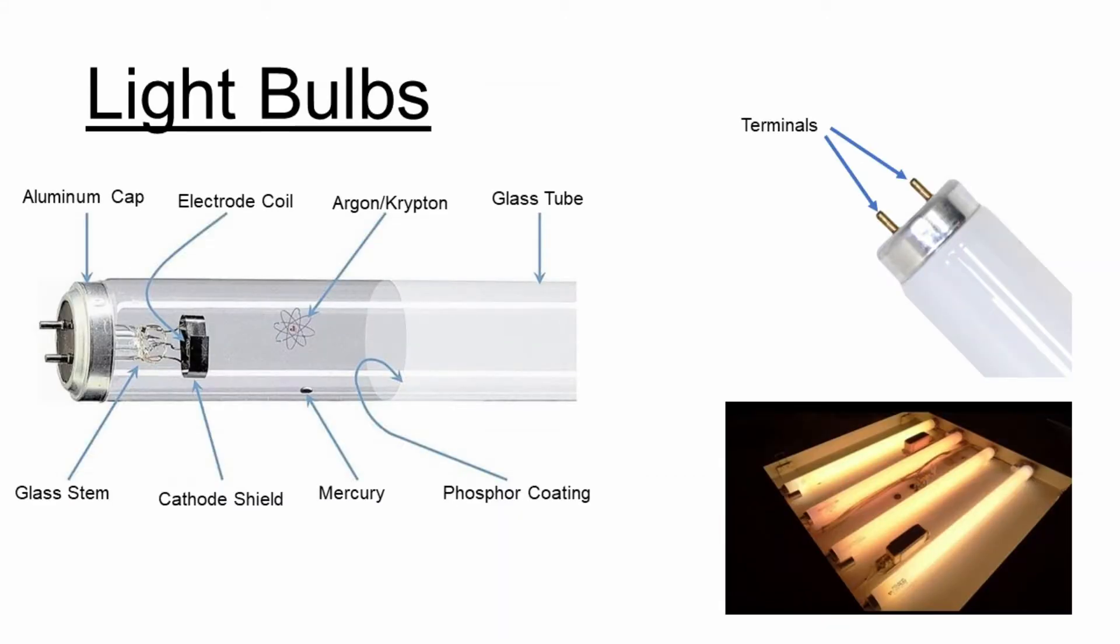Fluorescent light bulbs are typically filled with an inert gas, typically argon, and have a powder coating that dictates the color of the light. The bulbs also have terminals on each side that will connect to the conduction strips. A typical fluorescent light source will have multiple fluorescent bulbs wired in parallel.